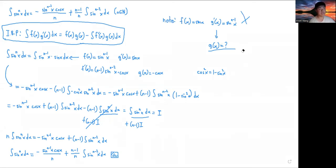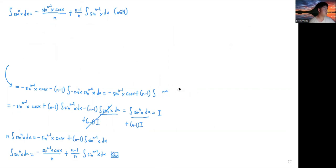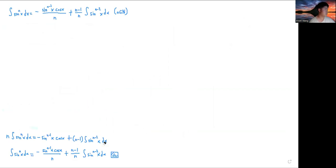So I will now erase everything except for the formula, the reduction formula for sine, just to show a few nice things. All right. So let's just apply this formula with, say, sine 5 x. So it's clear that n is equal to 5 in this case.